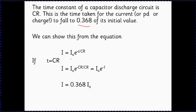Here's our initial current I naught, here's current at some time t, and if we make t the time equal to CR, the capacitance times the resistance, then what we find is we've got I equals I naught e to the minus t becomes CR.